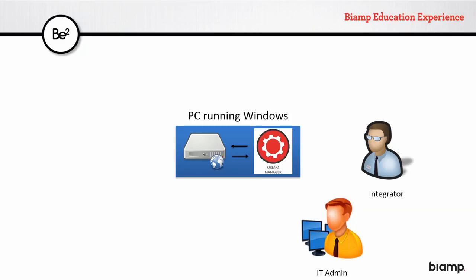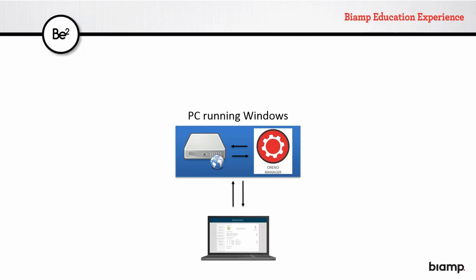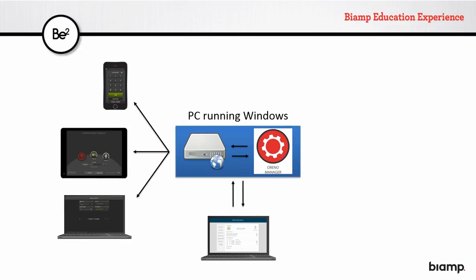When we install Orino, it doesn't install like typical software with a desktop icon you double-click. Instead, the Orino Manager is a process that installs and generates three things. It creates websites — similar to how google.com is hosted on a computer somewhere that generates that website's content. Orino Manager runs in the background of your computer and generates the Orino Admin interface, which the administrator uses to make adjustments, add rooms, add users, and assign users to rooms.